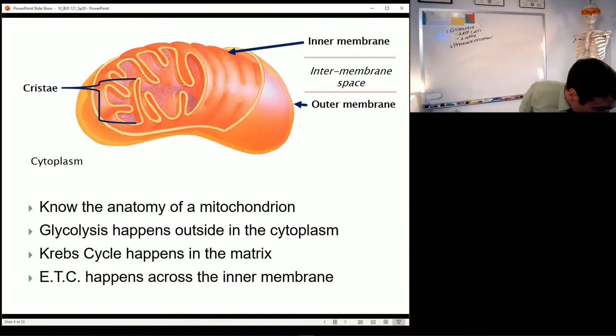For example, each one of those little folds on the inner membrane, that is called a cristae. And the reason why those cristae exist is because the inner membrane is bigger than the outer membrane. It's got more surface area.